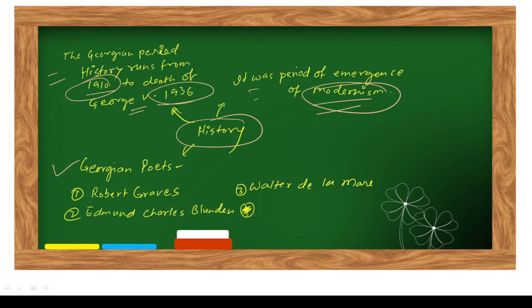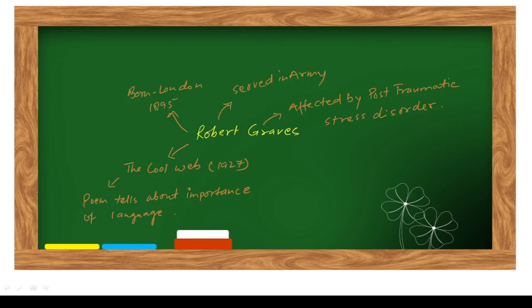If we take some examples, first is Robert Graves, Admiral Charles Blunden, and Walter de la Mare. Robert Graves was born in London in 1895 and he served in army. Most of these writers served in army and were affected by post-traumatic stress disorder, which is called PTSD. Robert Graves wrote one of his best poems at that time, The Cool Web, and The Cool Web got published in 1927.